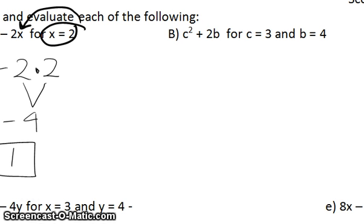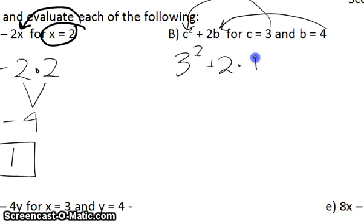All right. For letter B, we're asked to substitute twice for two different variables. C is equal to 3. So I'm going to put that in the place of C. And B is equal to 4. So that will go in the place of B. So when I substitute, instead of having C squared, I'll have 3 squared plus 2 times 4 instead of B. And again, that multiplication just comes because I know that there's a multiplication right there.